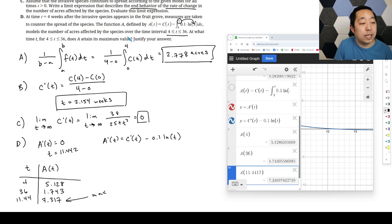They're asking at what time does it attain its maximum value? So that occurs at T is equal to 11.441 weeks. And that is in the interval. That's how you do the first FRQ.